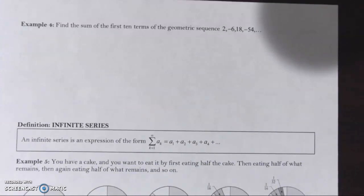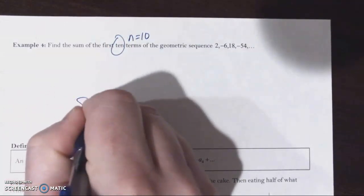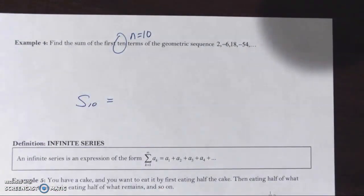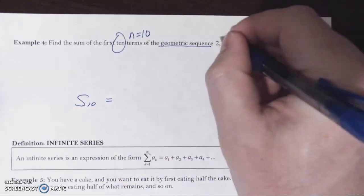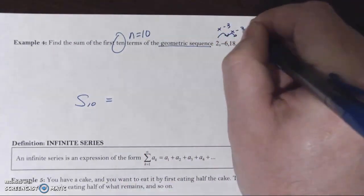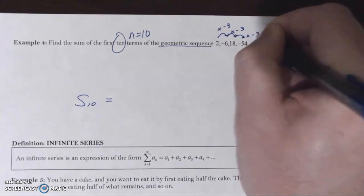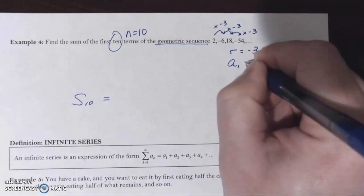Example 4: find the sum of the first 10 terms of the geometric sequence 2, negative 6, 18, negative 54, and so on. So n is going to be 10 — we're looking for the partial sum of the first 10 terms. The sequence is geometric; we're multiplying by negative 3 each time, so our common ratio is negative 3 and our first term is 2.